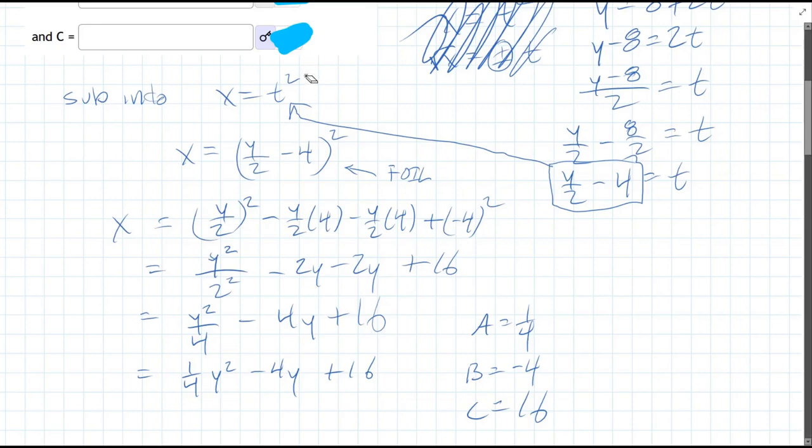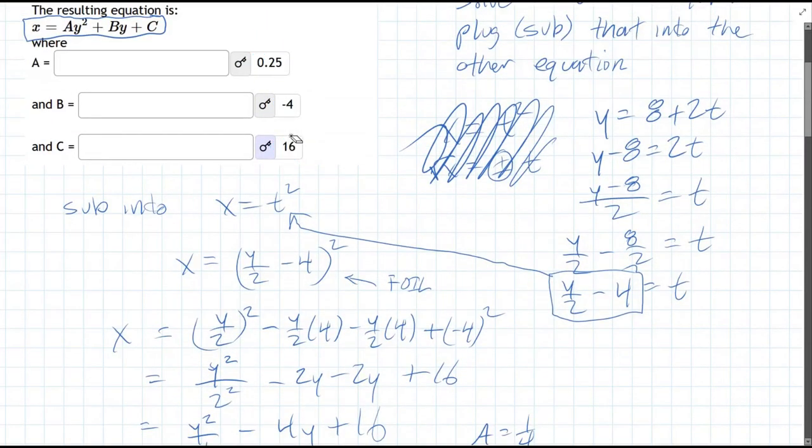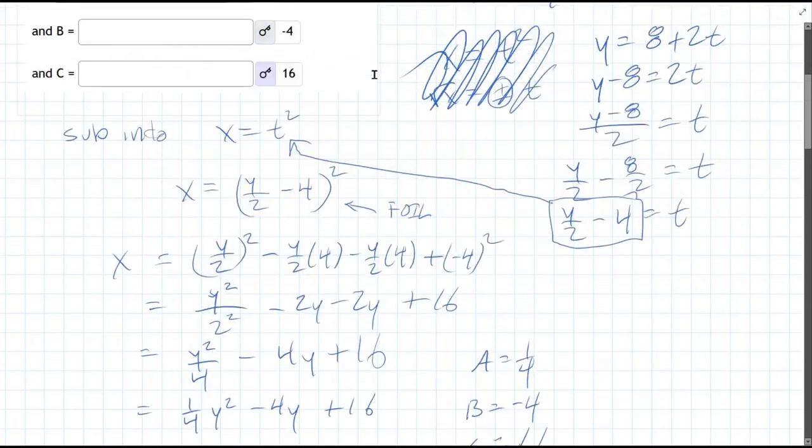Now we'll check our answers real quick. There's a decimal, but that's 1 quarter in decimal. Negative 4 and 16 right there.